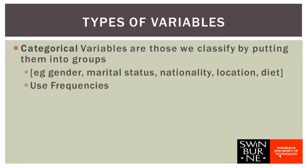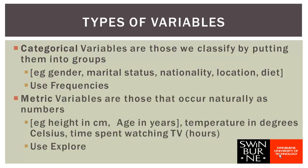But if you think about variables like time spent watching TV, which was measured in hours, that's something that naturally occurs as numbers - it takes a whole range, a continuous scale of values. Variables that are naturally occurring as numbers are referred to as metric variables. So things like height in centimetres, age in years, temperature in degrees Celsius, time spent watching TV - they're all metric variables. For these, we'd use the explore procedure and produce a table of descriptive statistics, percentiles, a box plot and a histogram.